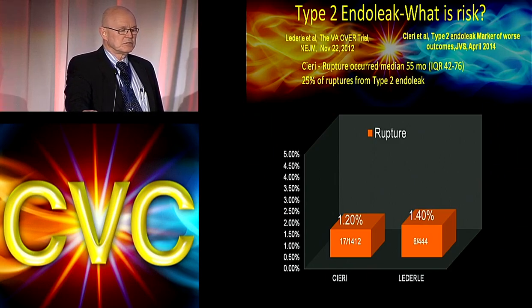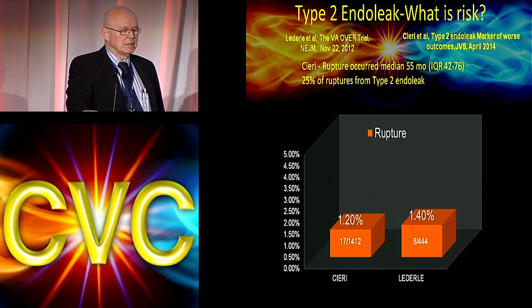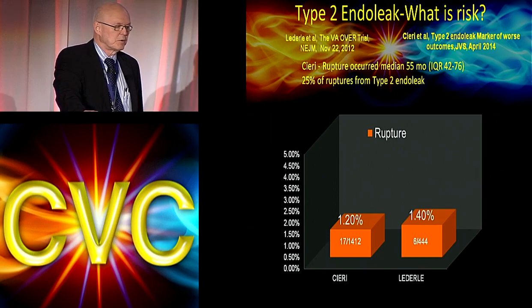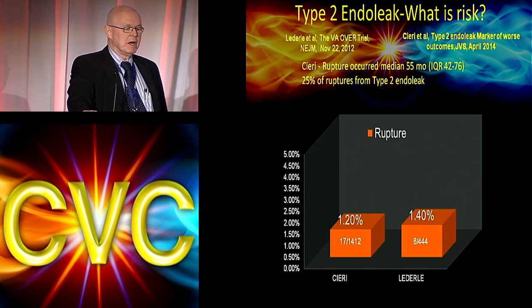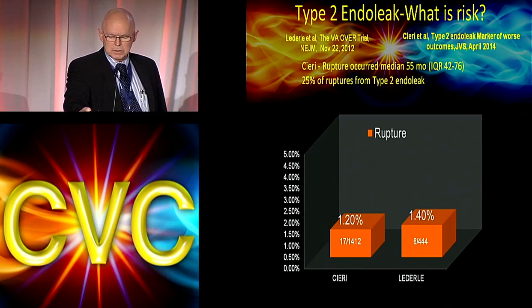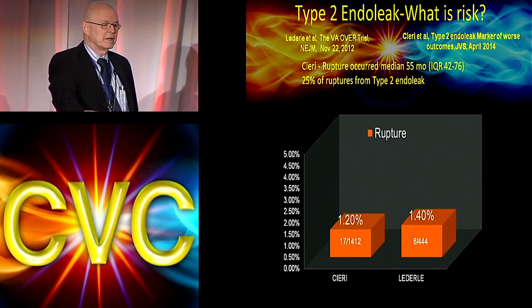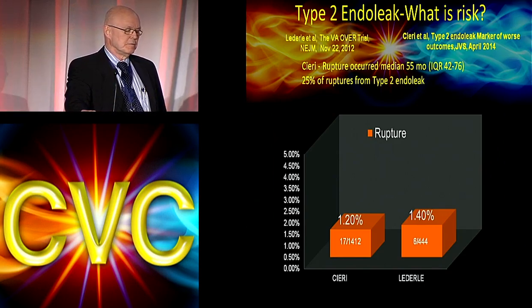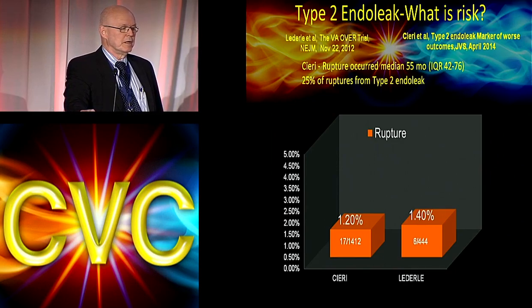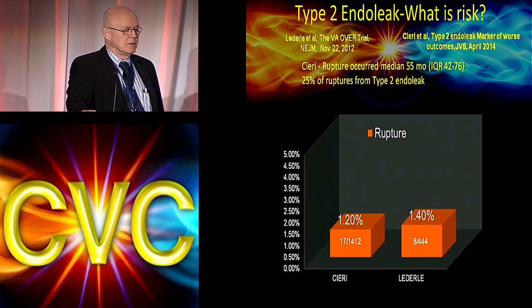Looking at rupture rates: Siri's 1,400-patient series showed about 1.2% rupture rate; Letterly's report was about 1.4%. Siri estimated that 25% of ruptures were from type 2 endoleaks. The median time to rupture was 55 months, with an interquartile range of 42 to 76 months — correlating with when the survival-procedure curve starts to separate.